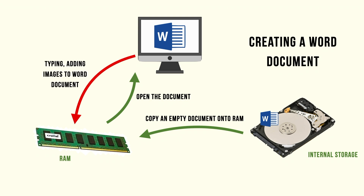And let's say you type a sentence or add some images to the Word document. Essentially, what you're doing is you're adding a few bytes of text or your image onto the RAM, so it doesn't go directly to the internal storage yet. And when you make that change, it goes ahead and updates your document view or whatever you see on your screen.